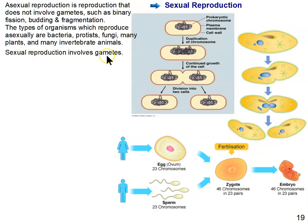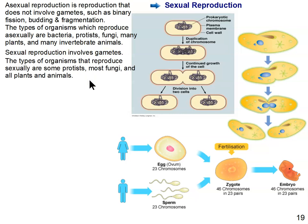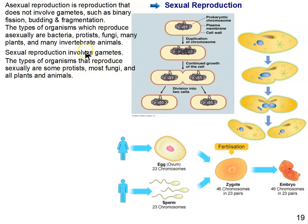Sexual reproduction involves gametes — the production of sperm and eggs. Those that reproduce sexually include certain protists — not all protists reproduce by binary fission, some reproduce both sexually and asexually. Most fungi reproduce sexually, and all plants and animals reproduce sexually, though some plants and animals also reproduce asexually. Many invertebrate animals reproduce asexually as well as sexually.